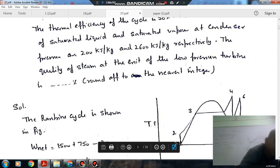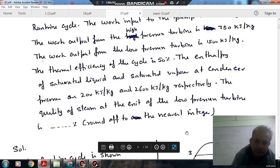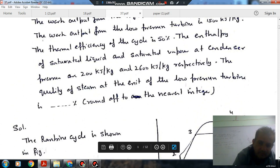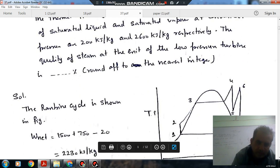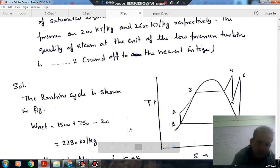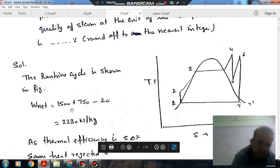The work done is work done in turbines and work done by the pump. The turbine work is (H4 - H5) + (H6 - H7), and the pump work is (H2 - H1). So net work done is turbine work minus pump work. This is given as 1500 kJ/kg.